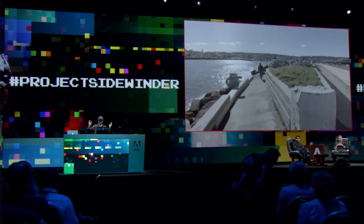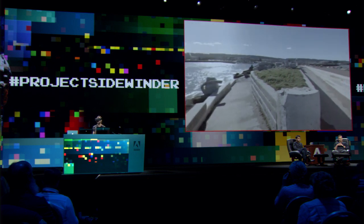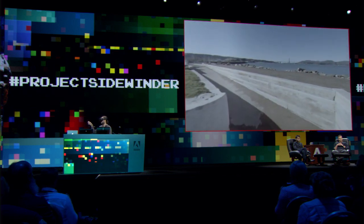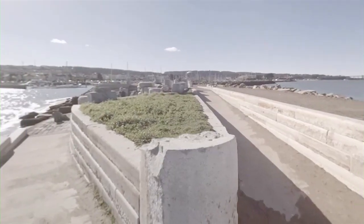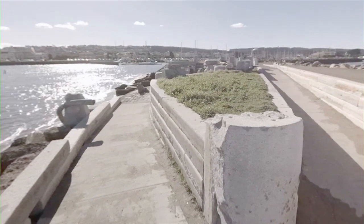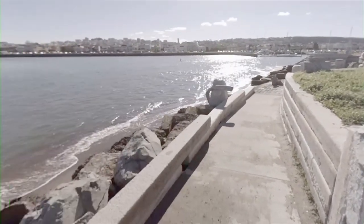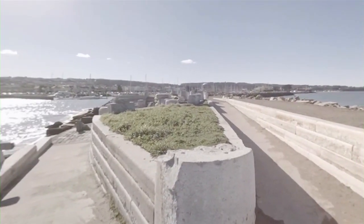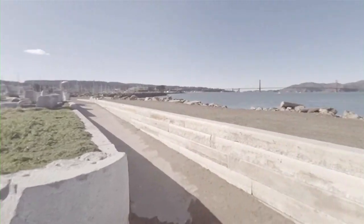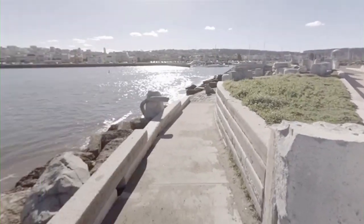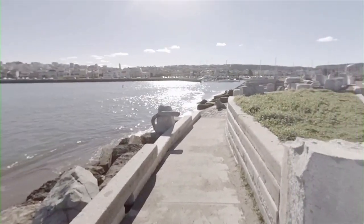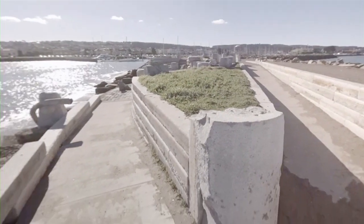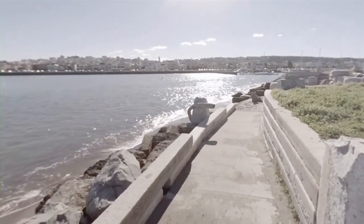Here I am in San Francisco with a pretty standard VR video. There's the Golden Gate Bridge. I'm on the Embarcadero, on the pier. We can see some grass, some rocks, some waves. This is a pretty standard video — I can look around. It was captured with a GoPro Odyssey camera and Google Jump to stitch the video.